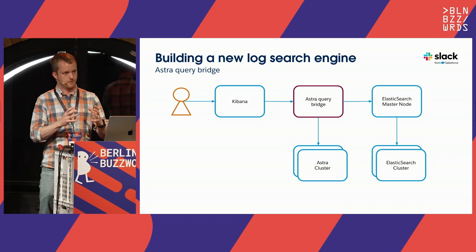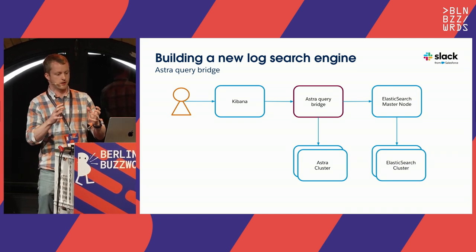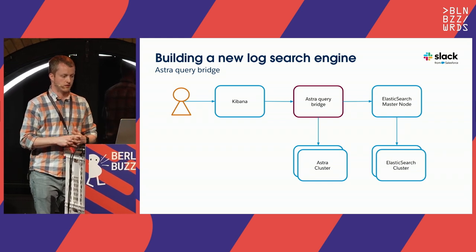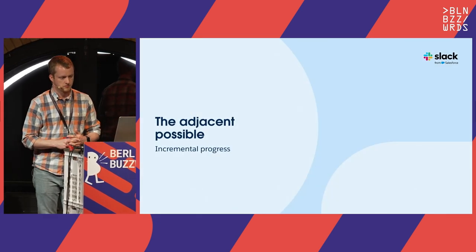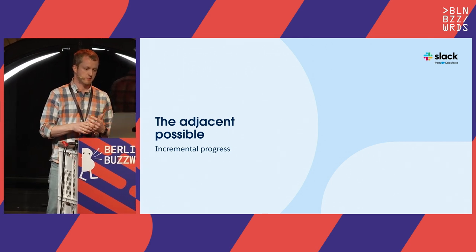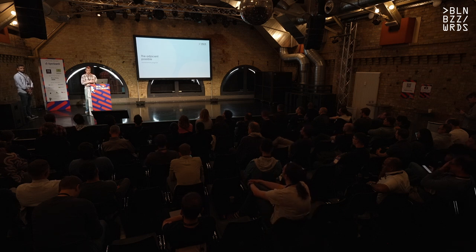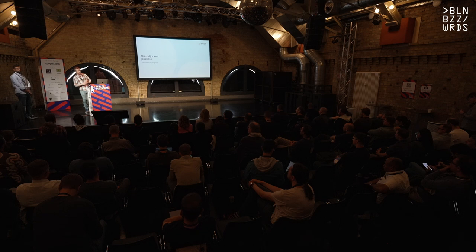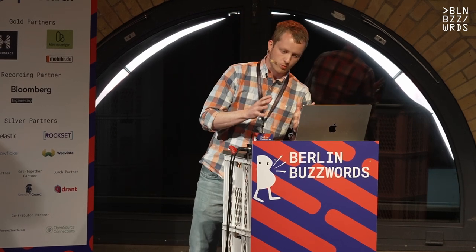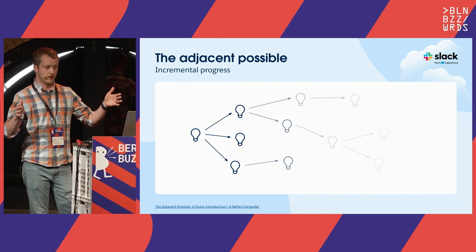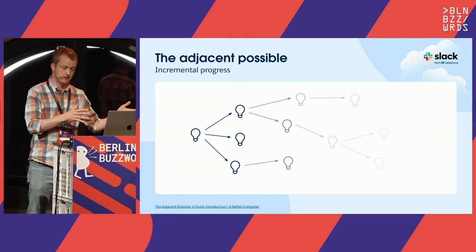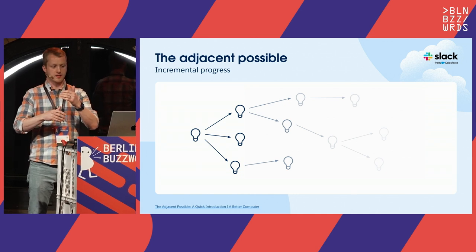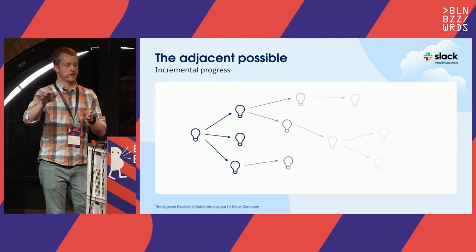Taking a step back, this idea of exploring incremental changes is best described as the adjacent possible. This is an idea popularized by Stephen Johnson in his book 'Where Good Ideas Come From,' heavily borrowing from biology. The concept is that given current conditions, there are a finite number of things that can change. While there are many potential paths or ideas, generally it's the ones that are adjacent that take hold. Some things only become obvious at that perspective — you can see multiple steps ahead occasionally, but as you continue down that path, it becomes more unclear.